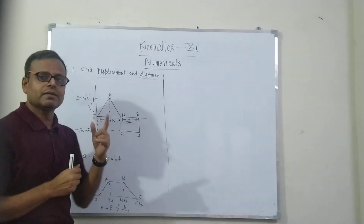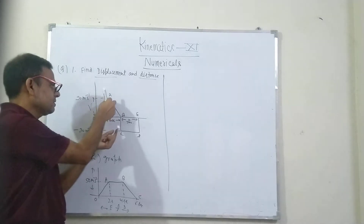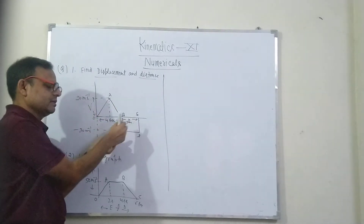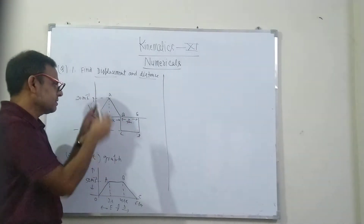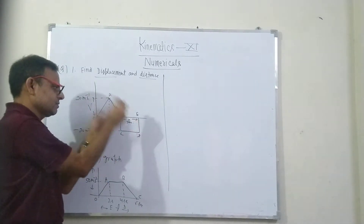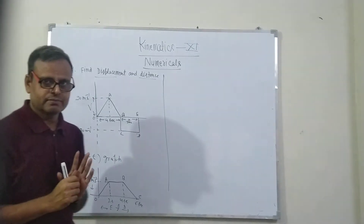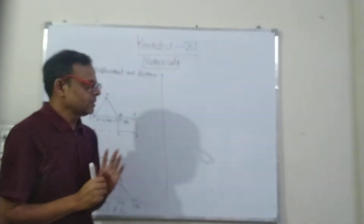For displacement: this upper area minus this lower area. For distance: this upper area plus this lower area — in a VT graph. So let us solve it.